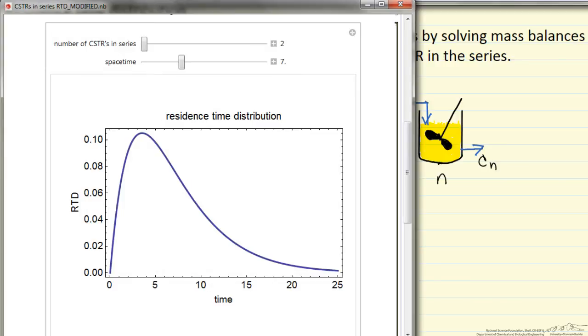So this is a mathematical simulation plotting this residence time distribution versus time, where the space time in this case, which is 7, is for the entire system of reactors.